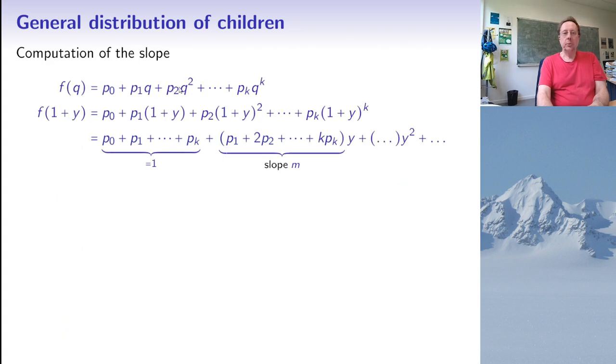And now we can compute the slope. So if you know about derivatives, you can compute it immediately. But in case you don't know about derivatives, there's a simple argument. So let us say that Q is 1 plus y. And so I replace this Q by 1 plus y, this Q squared by 1 plus y squared, and so on. And now I expand all these powers, but I retain only the terms that do not depend on y and those which are proportional to y.